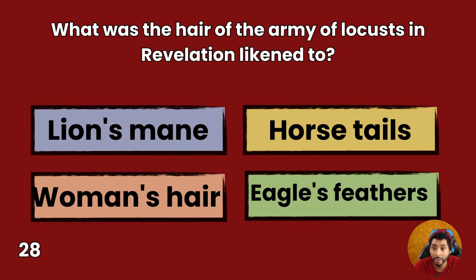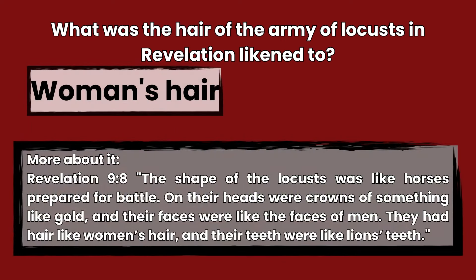Question 28: What was the hair of the army of locusts in Revelation likened to? A lion's mane, horse's tails, woman's hair, or eagle's feathers? Answer: Woman's hair. Revelation 9:8 — The shape of the locusts was like horses prepared for battle. On their heads were crowns of something like gold, and their faces were like the faces of men. They had hair like woman's hair, and their teeth were like lion's teeth.